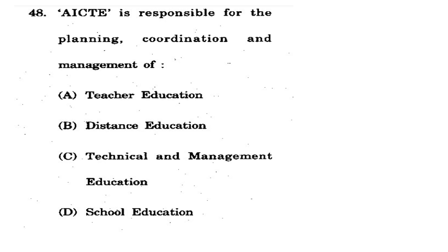Question 48: AICTE is responsible for planning, coordination, and management of what? Options: teacher education, distance education, technical and management education, school education. If you know the full form - All India Council for Technical Education - it relates to technical education. So AICTE plans, coordinates, and manages technical and management education. The correct option is C.